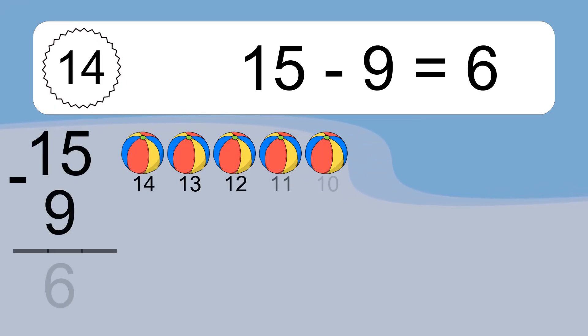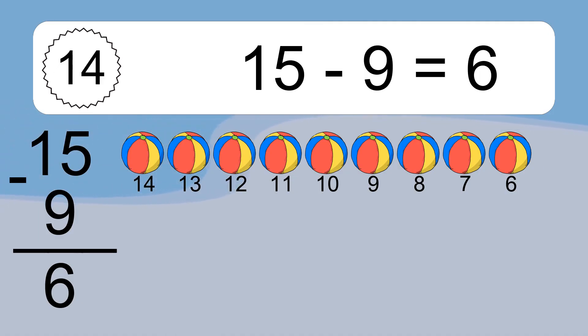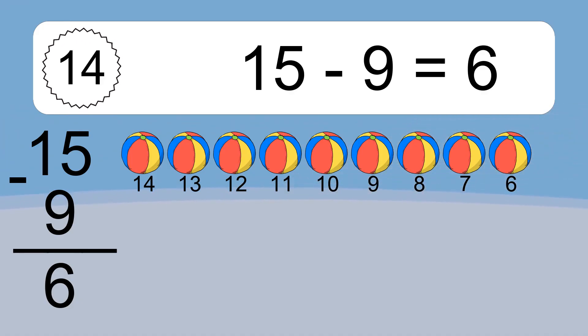15 minus 9 equals 6. Let's count it: 14, 13, 12, 11, 10, 9, 8, 7, 6.